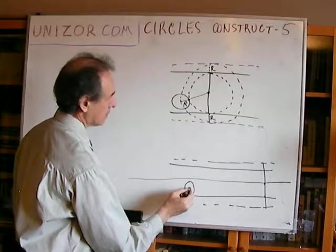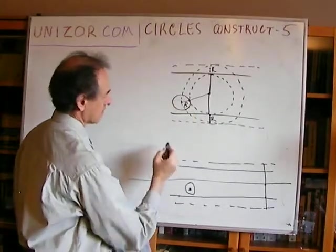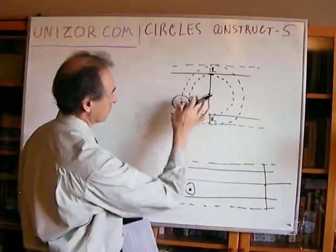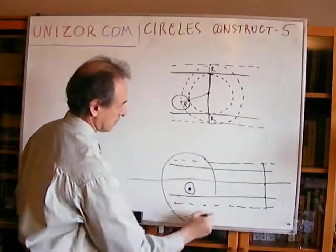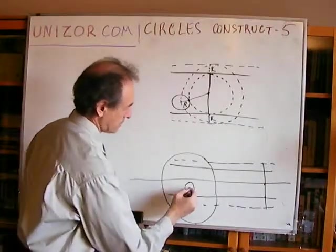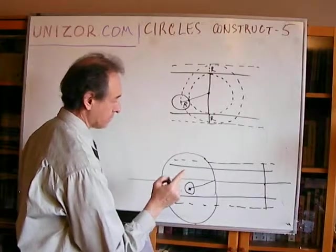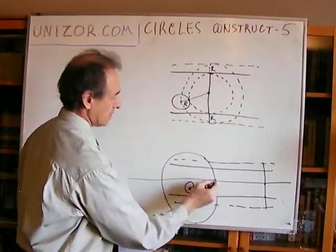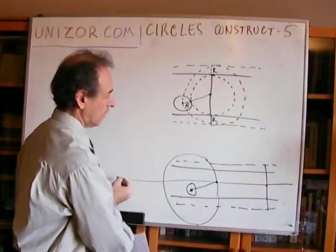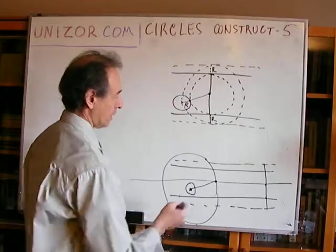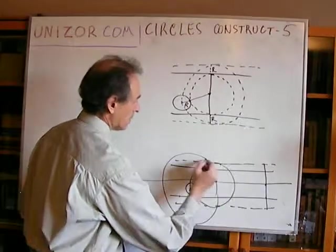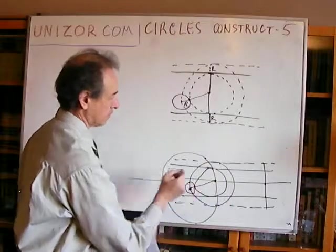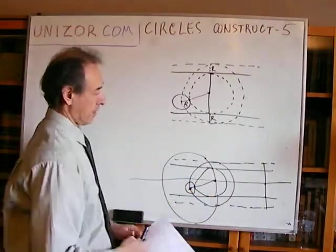We take the center of the given circle, use a radius equal to r plus the radius of the circle we're looking for, and draw a circle. The intersection of that circle with the midline gives our center. We don't need to draw the bigger circle — since we have the center, we can construct the smaller one directly.